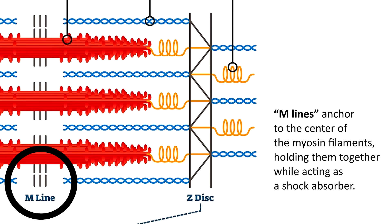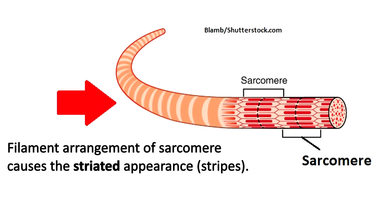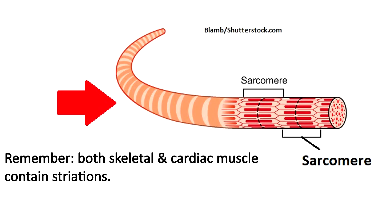The M-lines, or M-bands, anchor to the center of the myosin filaments, holding them together while acting as a shock absorber. To help us understand the parts of the sarcomere, anatomists divide the sections into bands or zones. The arrangement of filaments within these bands accounts for the striated or striped appearance of the skeletal muscle fibers, and that's an important characteristic about skeletal and cardiac muscle tissue that you're going to want to remember.